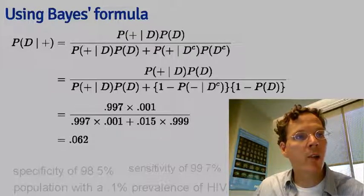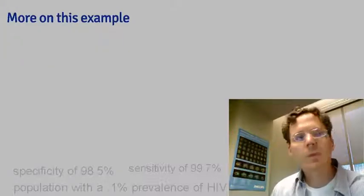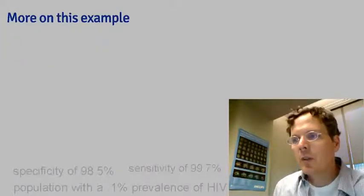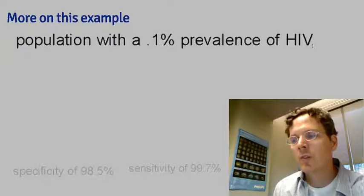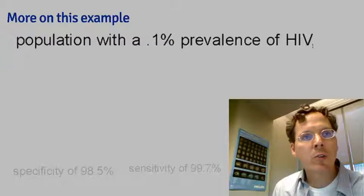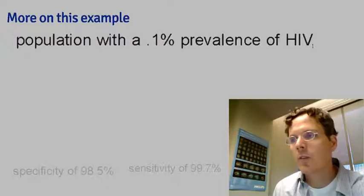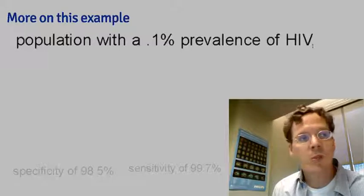So in this population, a positive test result only suggests a 6% probability that the subject has the disease — the positive predictive value is 6% for this test. The low positive predictive value is largely due to the low prevalence of the disease. However, imagine in the process of counseling this person about their positive test result, the counselor learned that the subject was an intravenous drug user who routinely had intercourse with an HIV-infected partner. They would assume the relevant prevalence for this person was much higher, and thus the positive predictive value was much higher.